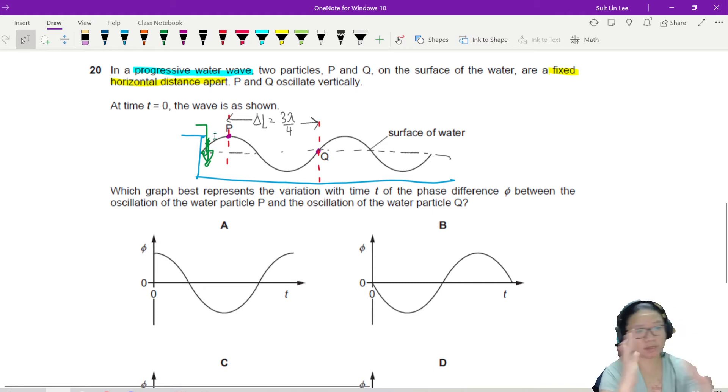So the separation of the gap between P and Q is 3 lambda over 4. And you're asked which graph best represents the variation with time T. So if you look at the x-axis is T. The phase difference between the oscillations of the water particle P and the water particle Q.